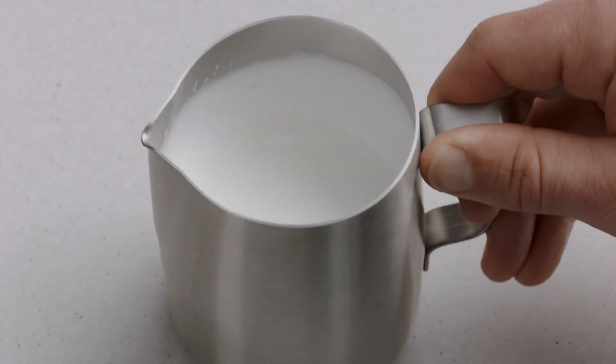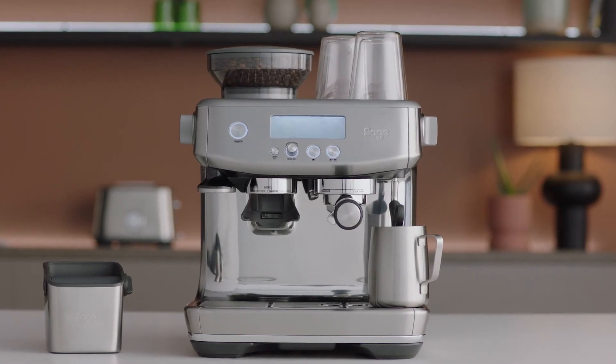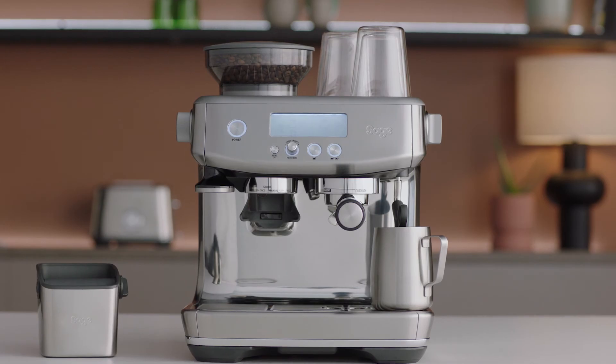Tap the jug on the bench to collapse any bubbles. Now you are ready to create latte art. Remember, different brands and types of milk and milk alternatives will texture differently, so you may need to adjust your texture levels accordingly.